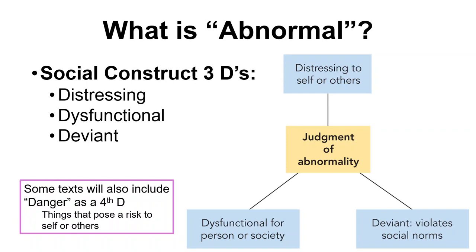If we go with something more about potential for harm, how do we decide? A lot of our texts talk about the three Ds: distressing, dysfunctional, and deviant. Distressing means it's causing stress for the individual exhibiting the behavior or for those around them — are they worried about their own actions, are people uncomfortable? Dysfunctional means it's not allowing you to take your role within society, preventing you from functioning in a normal setting.